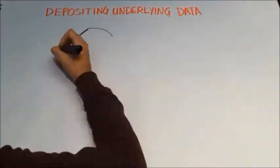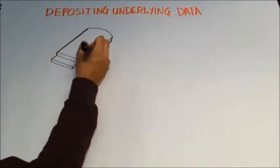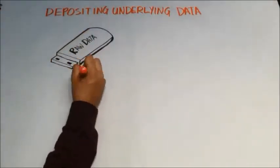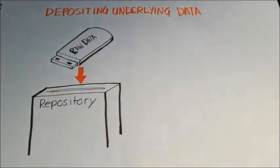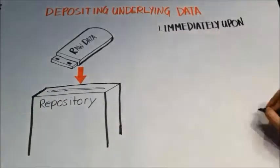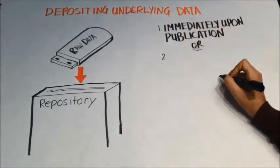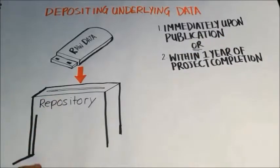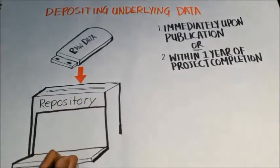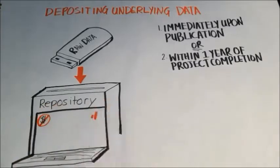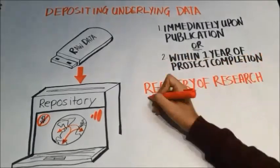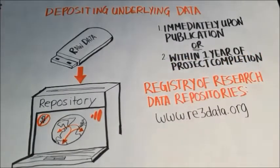Grand Challenges Canada also typically requires that the underlying datasets — the raw, primary data necessary to understand, assess, and replicate the reported study findings — be deposited into an open access repository immediately upon publication, or within a year of project completion, whichever is sooner. An open access repository is an online archive where datasets may be deposited for open, free of charge access by other researchers and the general public. GCC innovators should consult the Registry of Research Data Repositories to identify suitable repositories for their project data.